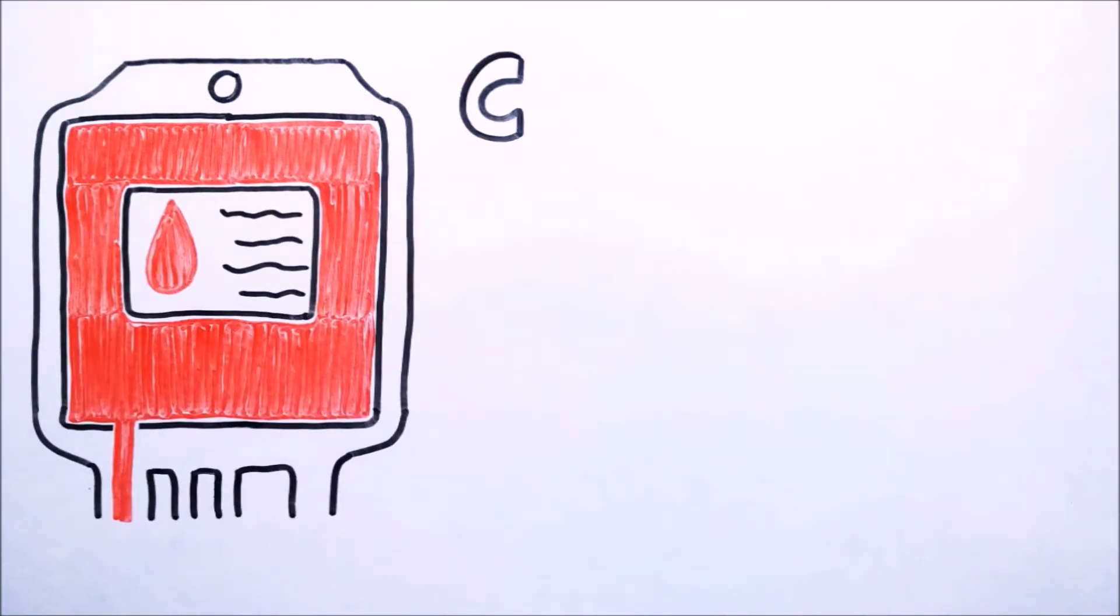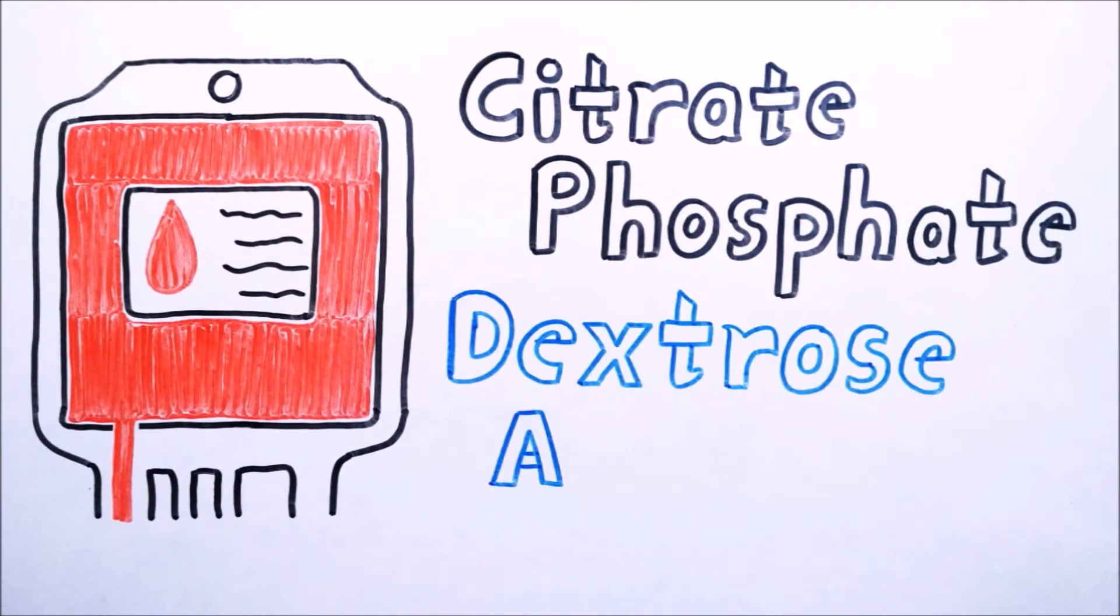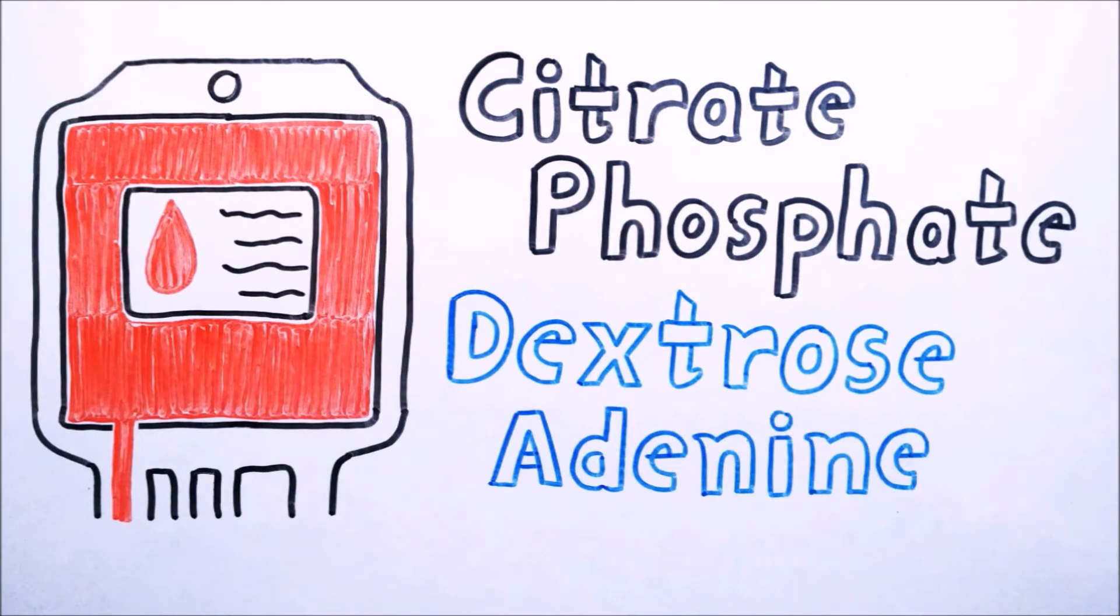The blood that you donate is collected in a blood bag. This bag has some compounds like citrate phosphate and dextrose adenine in it.